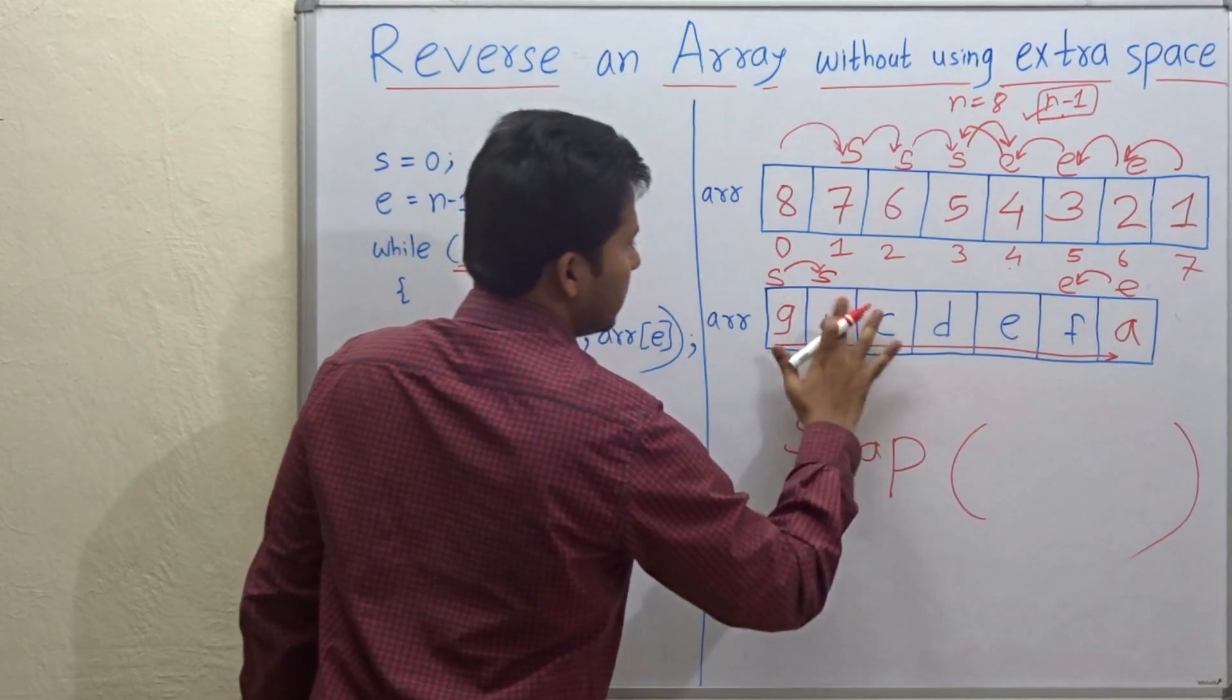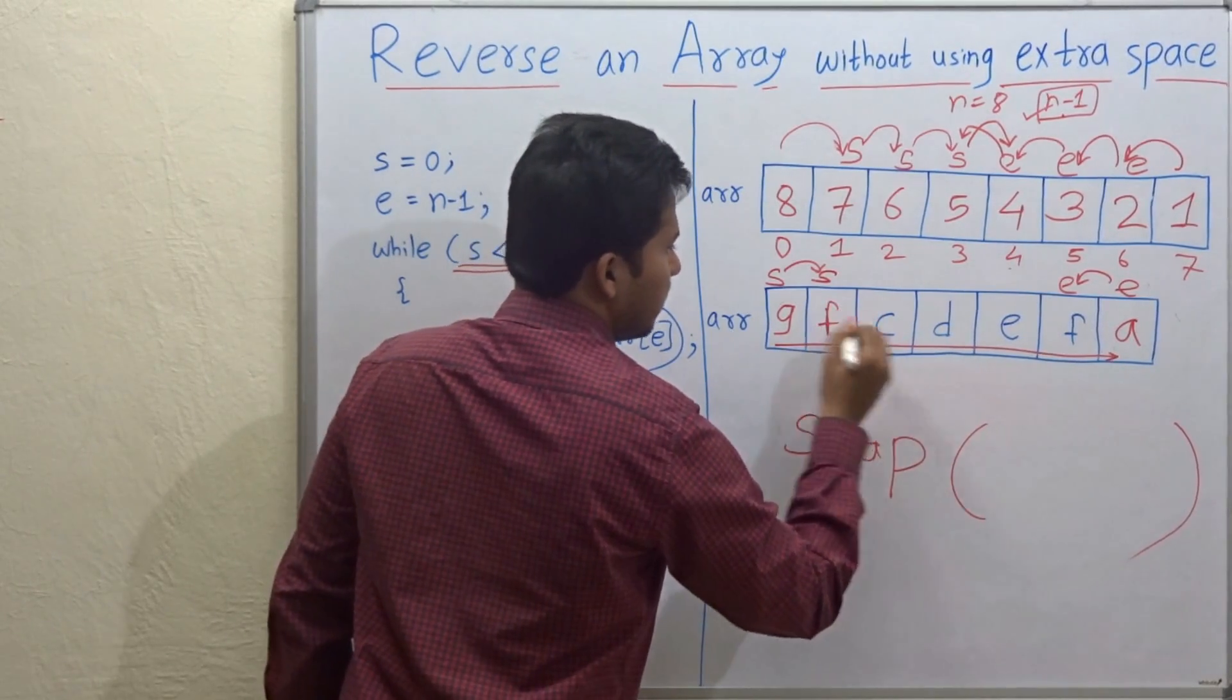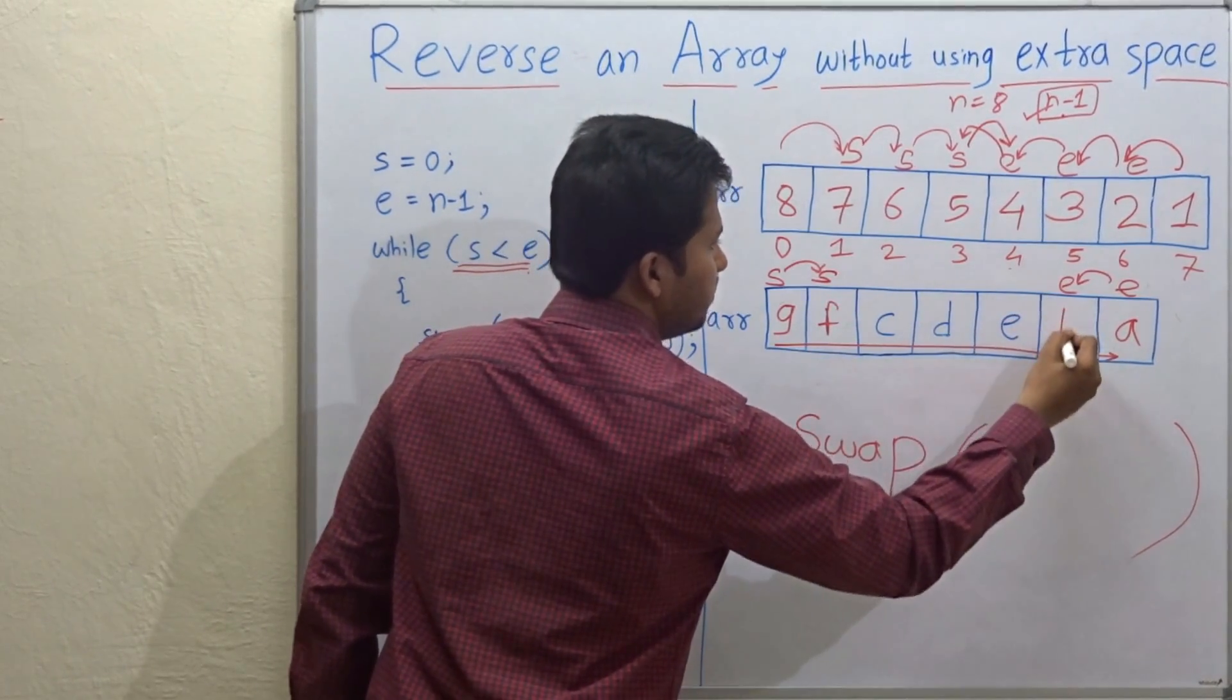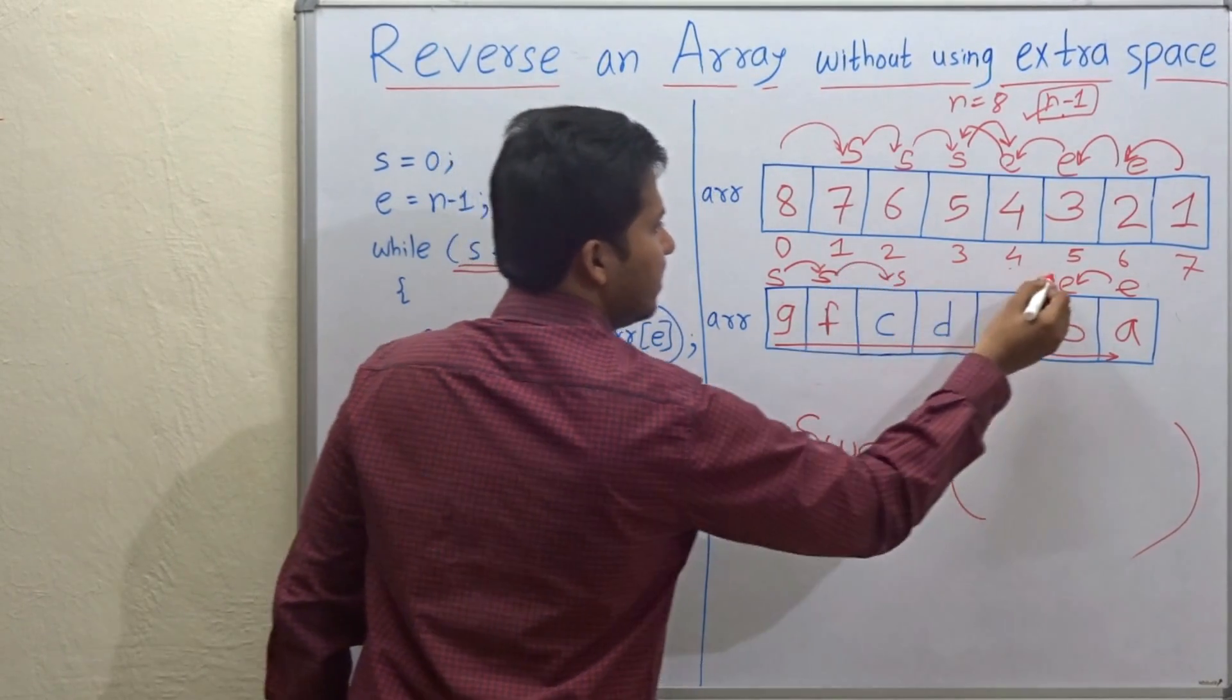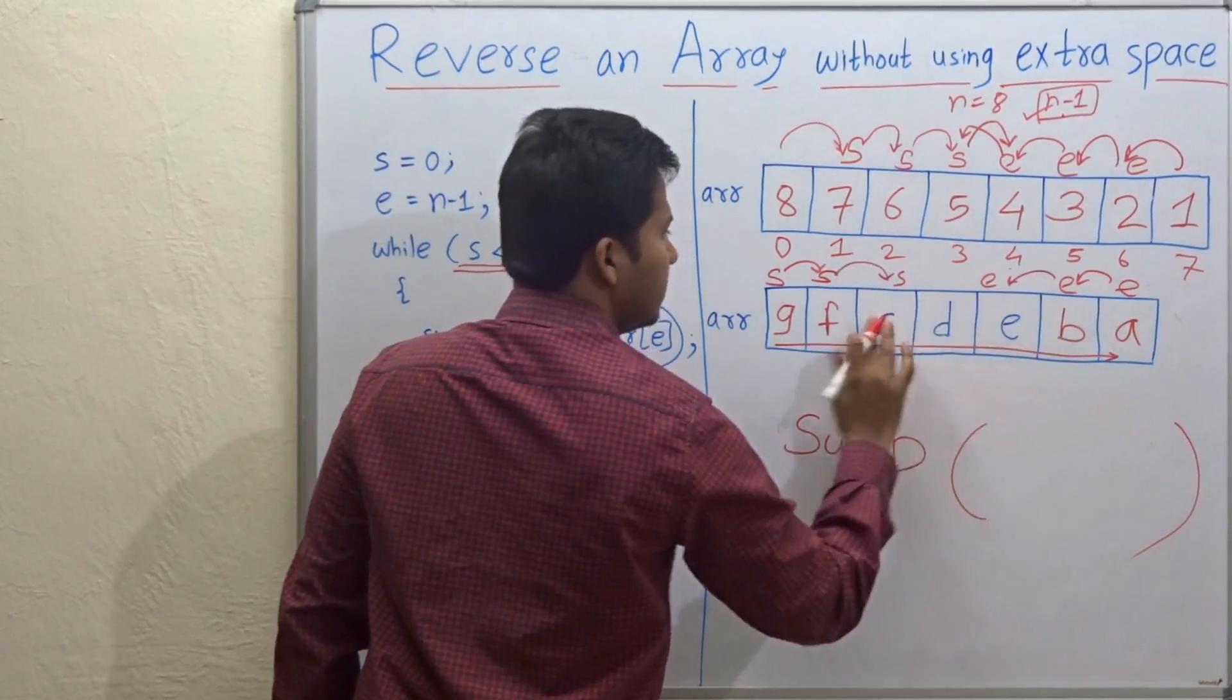Now B and F, they will be swapped. F and B. Again S will be incremented, E will be decremented.